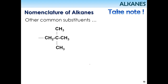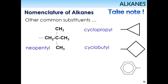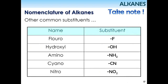Other common substituents you need to know: neopentyl, cyclopropyl, and cyclobutyl. There is also phenyl — that is benzene with one free bond. And benzyl — that is toluene (methylbenzene) with one free bond. Other substituents include fluoro, hydroxyl, amino, cyano, and nitro.